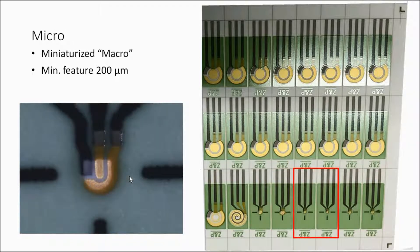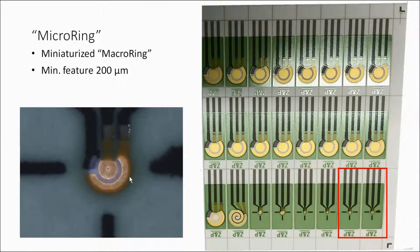We have a microelectrode where the feature size is about 200 microns, and then a micro ring where we have feature size about 200 microns. So what we're saying here is